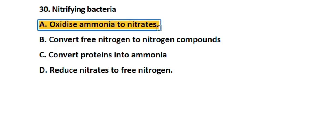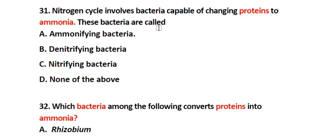Question number 31. The nitrogen cycle involves bacteria capable of changing protein to ammonia. These bacteria are called: Option A. Ammonifying bacteria, Option B. Denitrifying bacteria, Option C. Nitrifying bacteria, Option D. None of the above. The correct answer is Option A. Ammonifying bacteria.